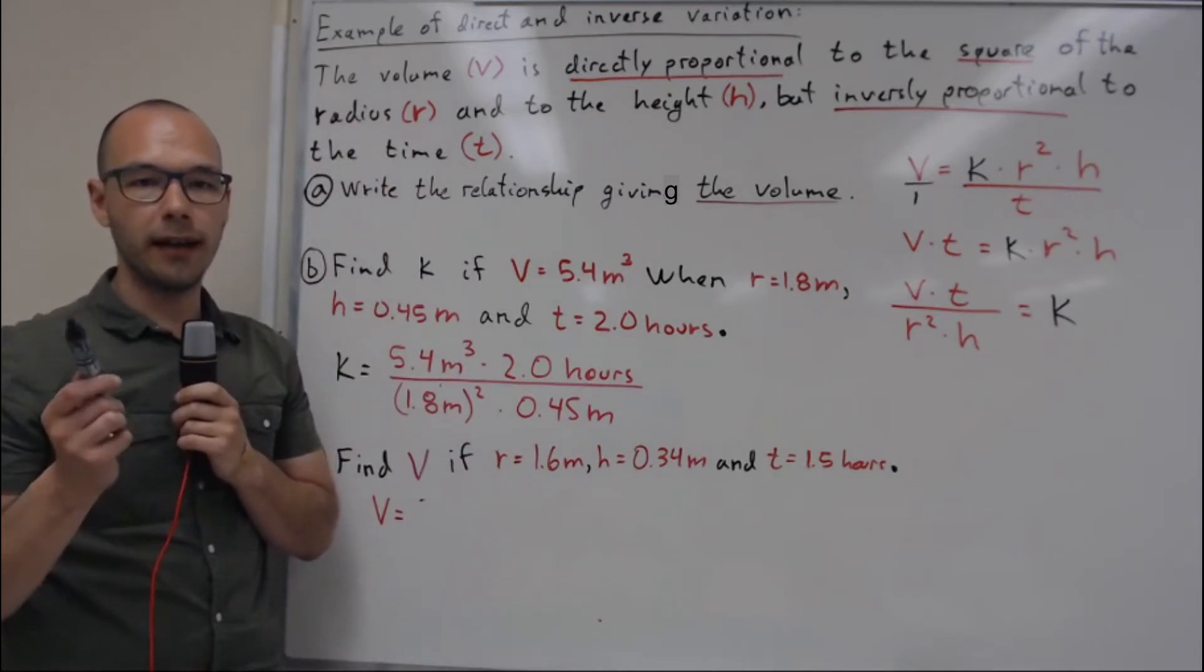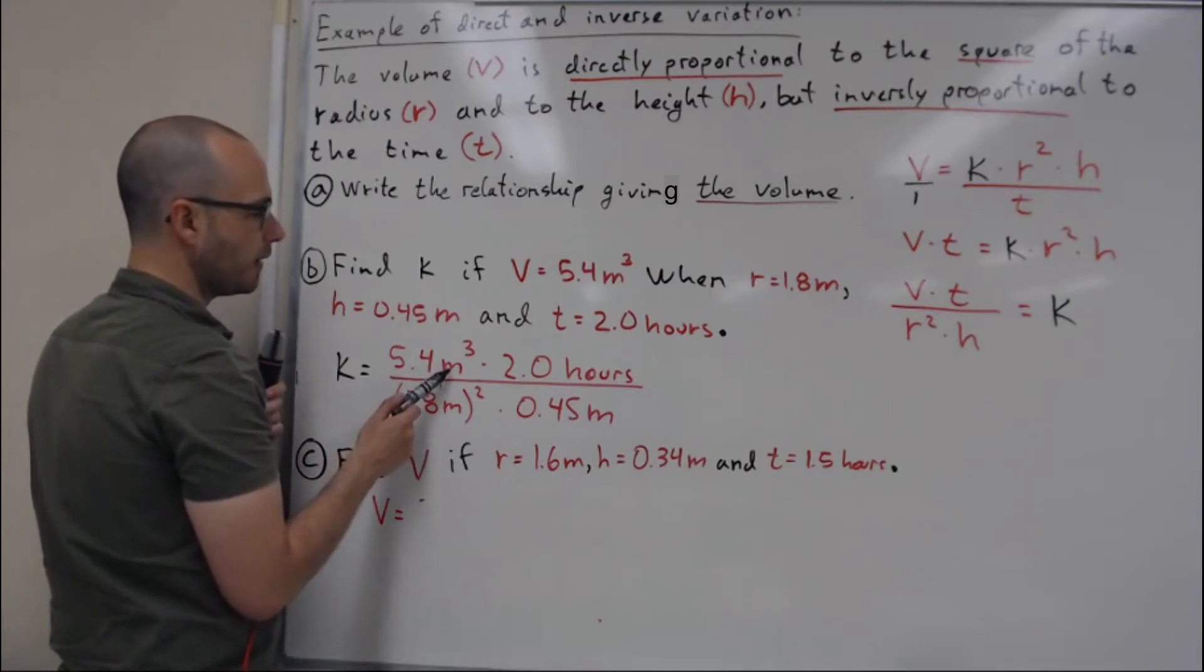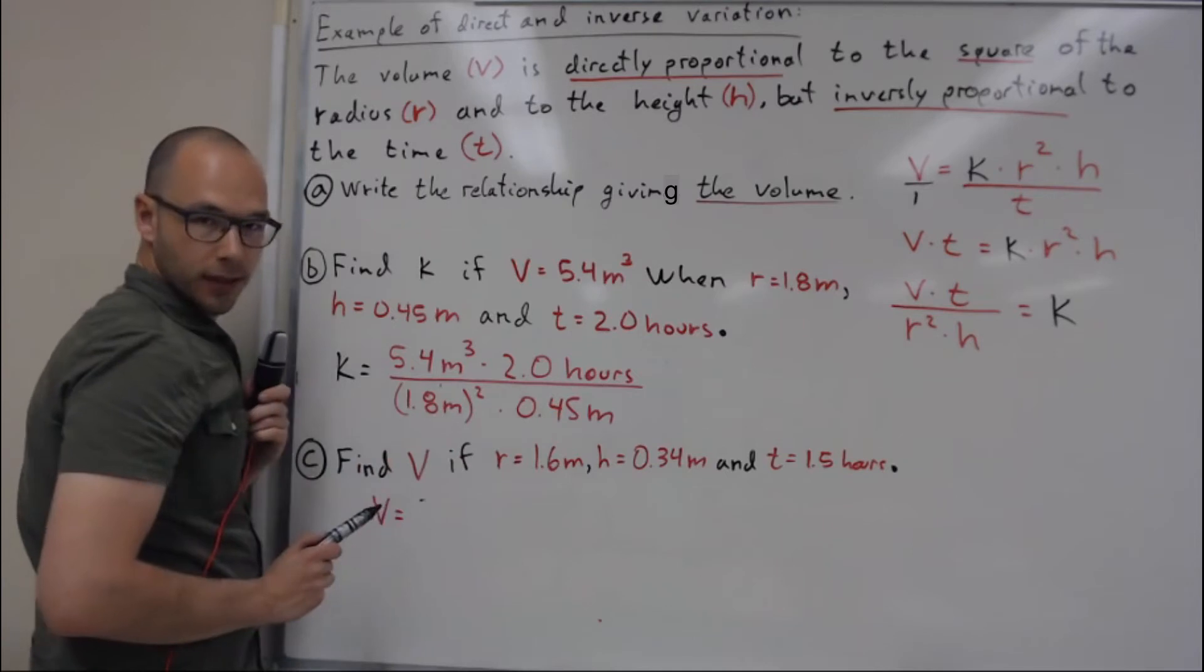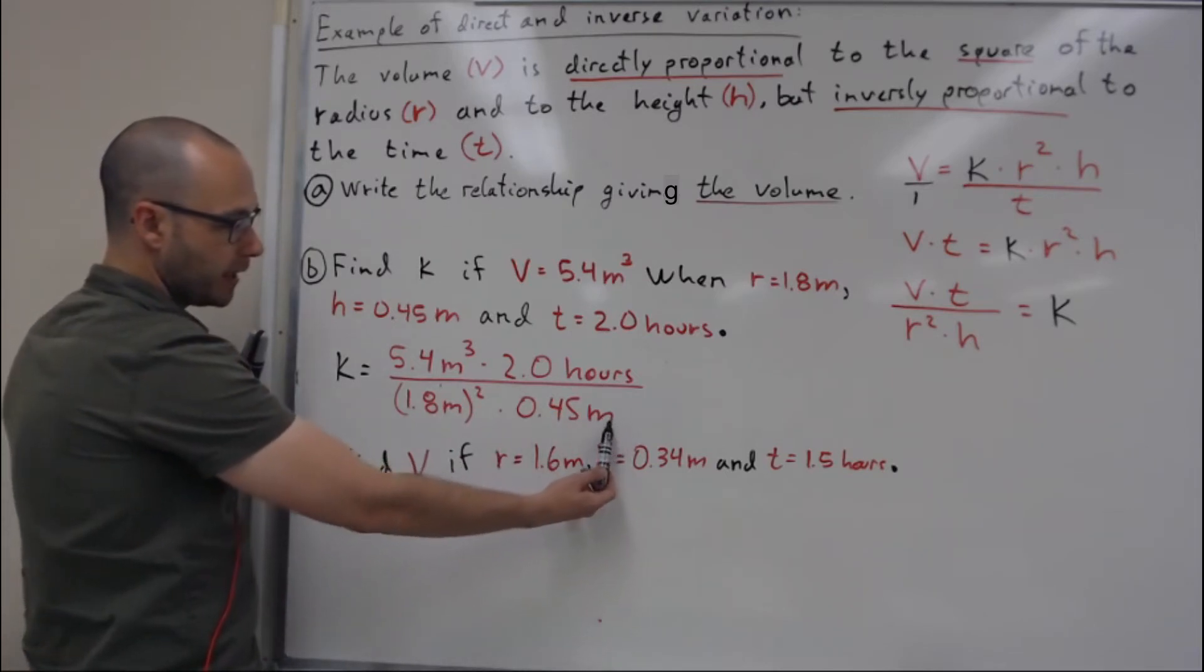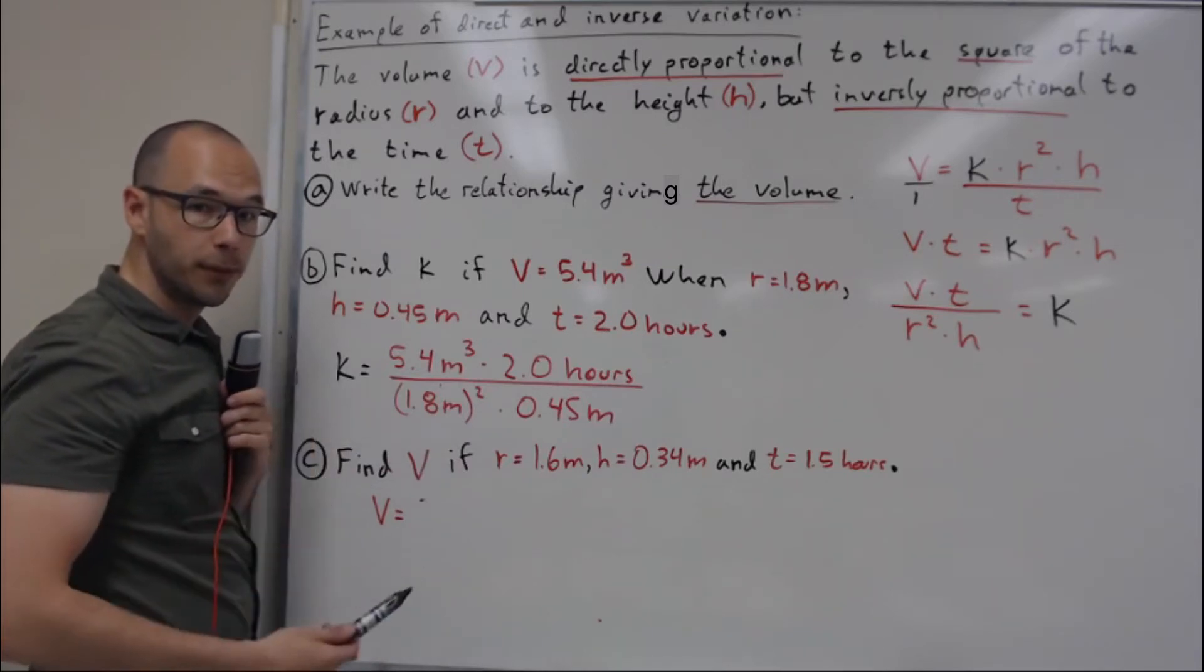And I can also figure out at that point what's going to be my units for my k. So I can see I've got meter cubed here, meter squared and meters. I'll have meter multiplied by meter squared, it's going to be meter cubed at the bottom.